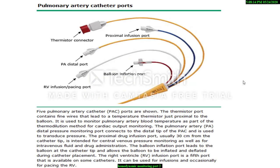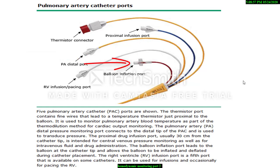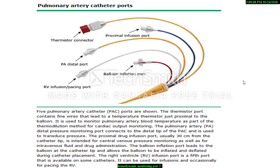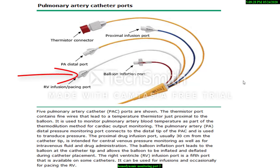A variety of catheters are present in clinical practice. This 5-lumen catheter consists of: a pulmonary artery distal port used to transduce pressure; the balloon inflation port for inflation and deflation of the balloon; the thermistor port, a fine wire that leads to a temperature thermistor located 4 cm proximal to the tip; the proximal port, usually 30 cm from the catheter tip, intended for right atrial pressure measurement; and the right ventricle infusion port, the 5th port, which can be used for infusion and occasionally for pacing the right ventricle. According to some books, the 5th port opens 40 cm from the tip of the catheter and is for central venous access for fluid and medication infusions.